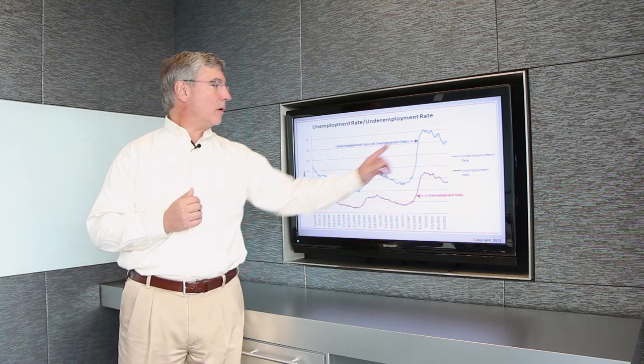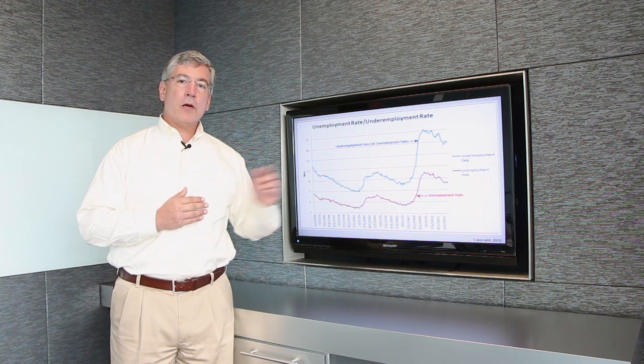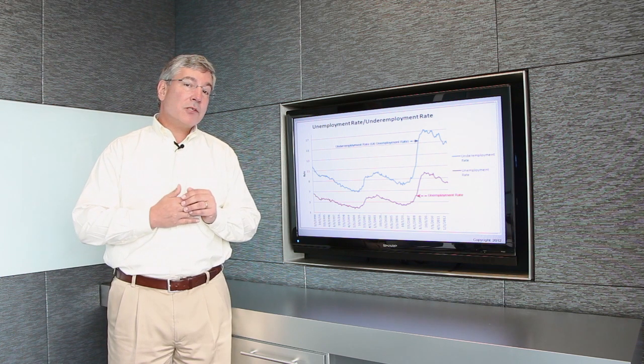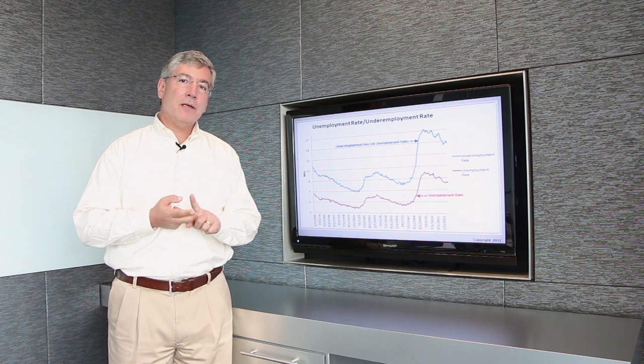So as this underemployment rate has gone up, so has the worry about the Fed. The worry about the Fed is that those workers aren't making as much as they used to. That can have an effect on housing, have an effect on spending. Hence, this is why the Fed did QE3.